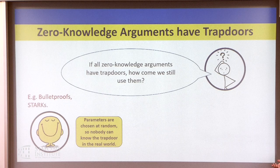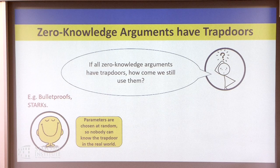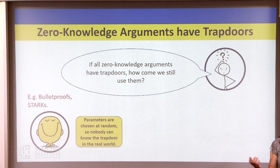Certainly, proofs which aren't SNARKs — things like Bulletproofs and STARKs — have a transparent setup. Even though a trapdoor technically exists, the parameters are chosen at random. We take a randomized algorithm, release all the public coins, input them into the setup, and we're fairly sure that nobody knows the trapdoor. It still exists, but nobody knows it.